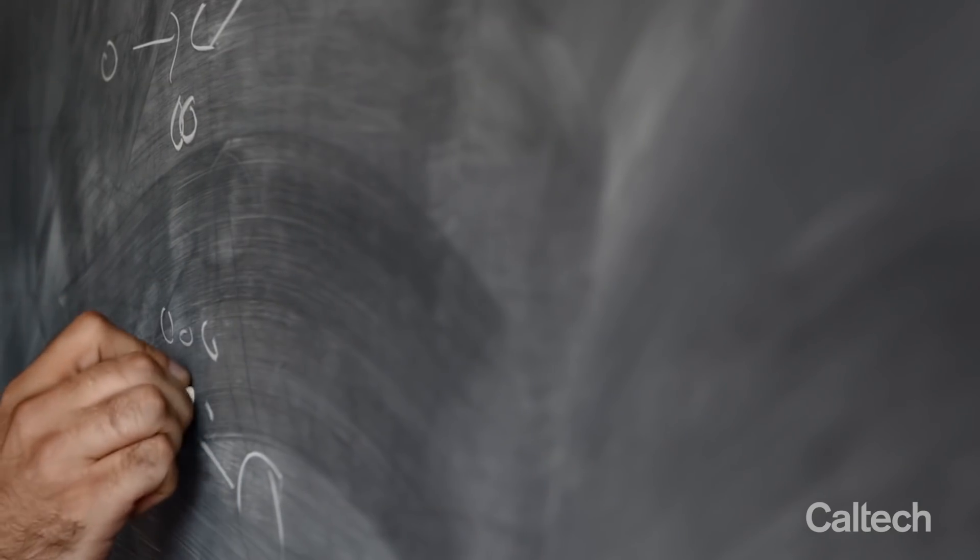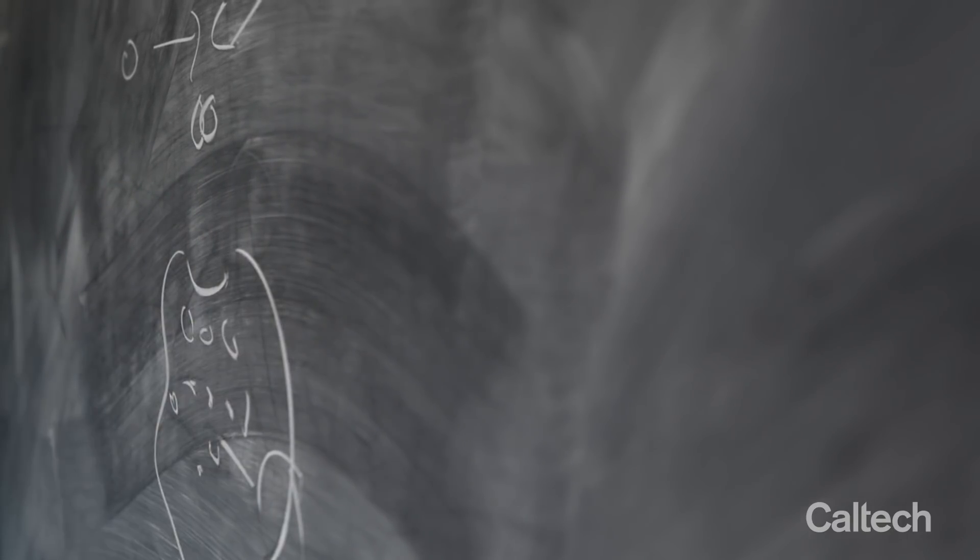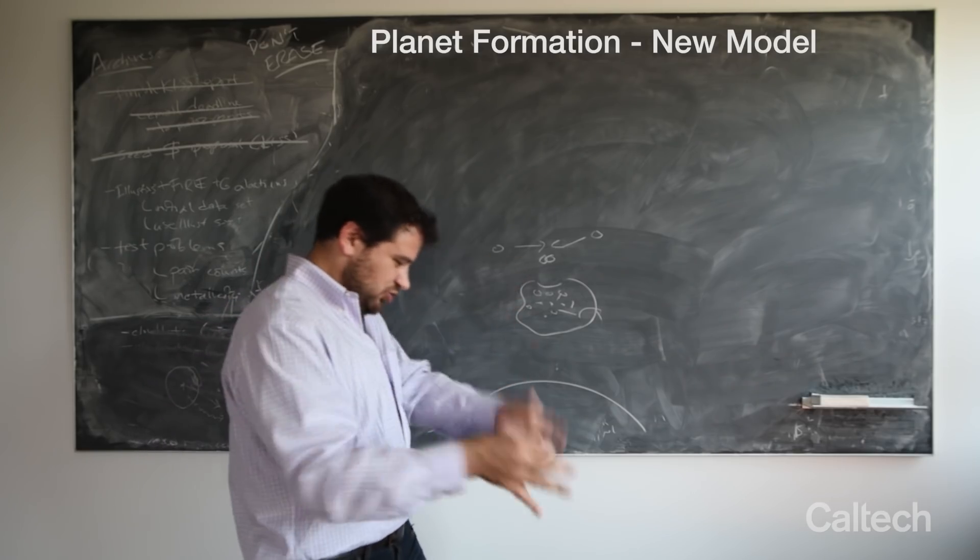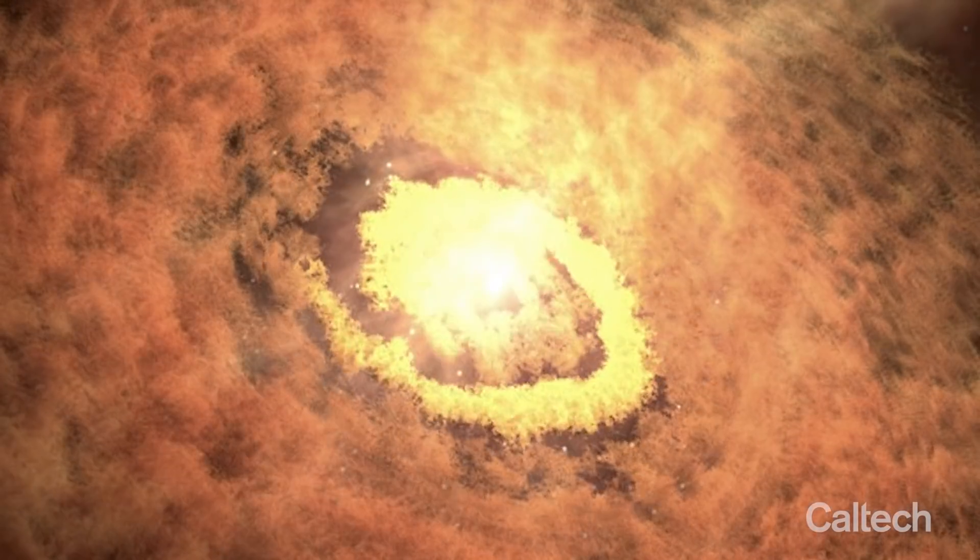So you get lots and lots and lots of these little tiny dust grains, clump them all together until they become so many in such a small space that gravity just pulls them all together into this giant object. So how does this actually happen? How do the dust grains actually clump together?